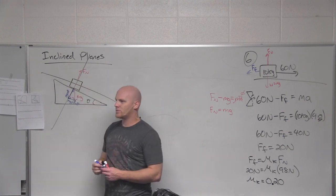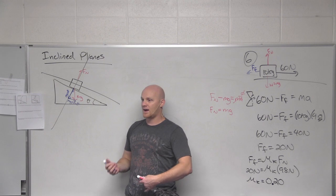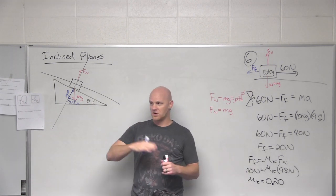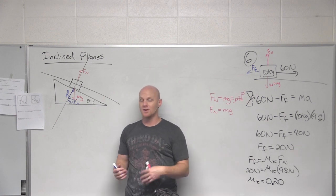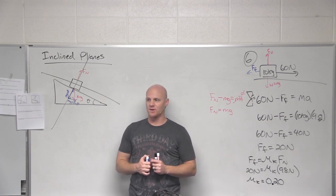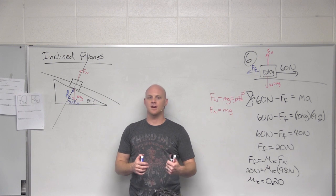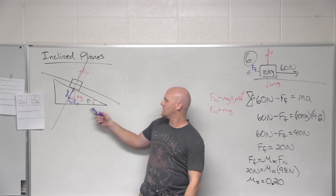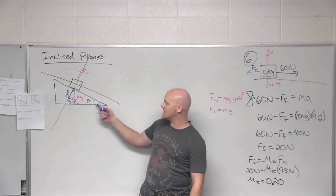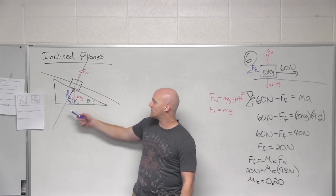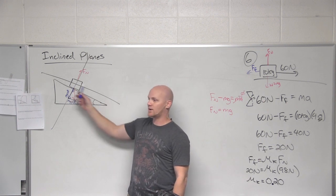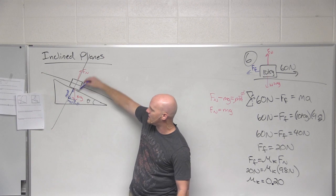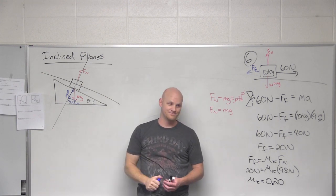Normally, if you have the angle with respect to the x-axis and a vector with x and y components, you'd use cosine to get the x component and sine to get the y component. On the incline, however, referencing theta as the angle relative to the horizontal, we use sine theta to get the new x component of the weight and cosine theta to get the new y component.